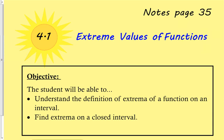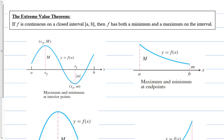Section 4.1: Extreme Values of Functions. We're starting Chapter 4, which covers mins and max values on graphs. The Extreme Value Theorem, or EVT: if f is continuous on a closed interval [a, b], then f has both a minimum and a maximum on the interval.